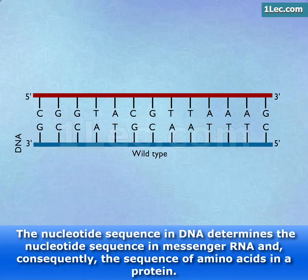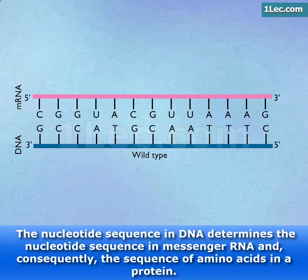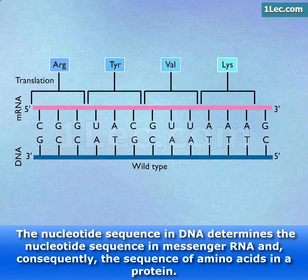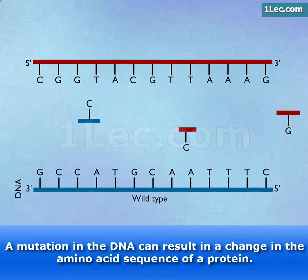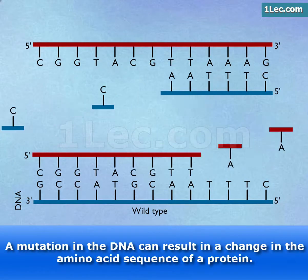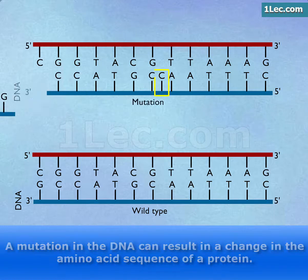The nucleotide sequence in DNA determines the nucleotide sequence in messenger RNA and, consequently, the sequence of amino acids in a protein. A mutation in the DNA can result in a change in the amino acid sequence of a protein.